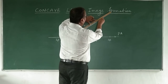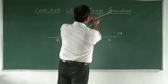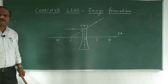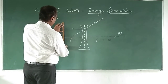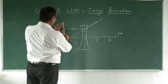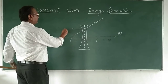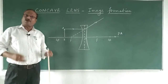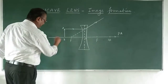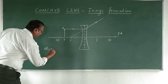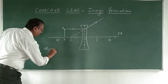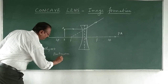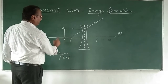Now we need to locate an object placed between F and 2F. Let me keep the object between F and 2F — this is object AB. Where will the image form and what will be the nature of the image?